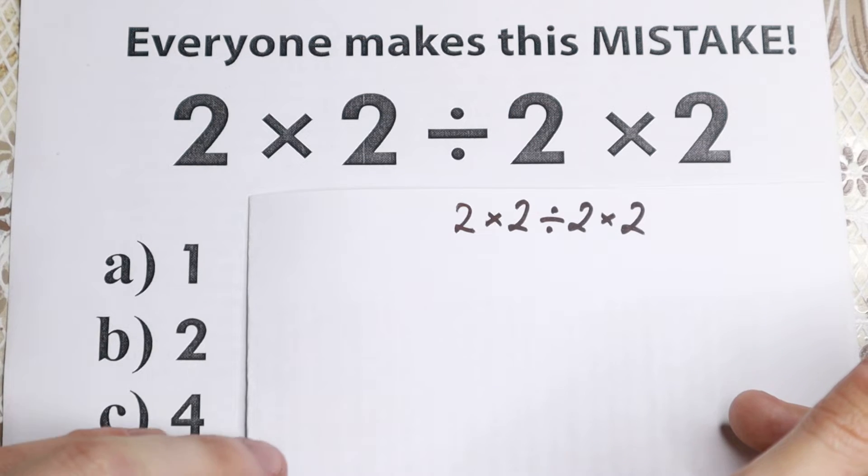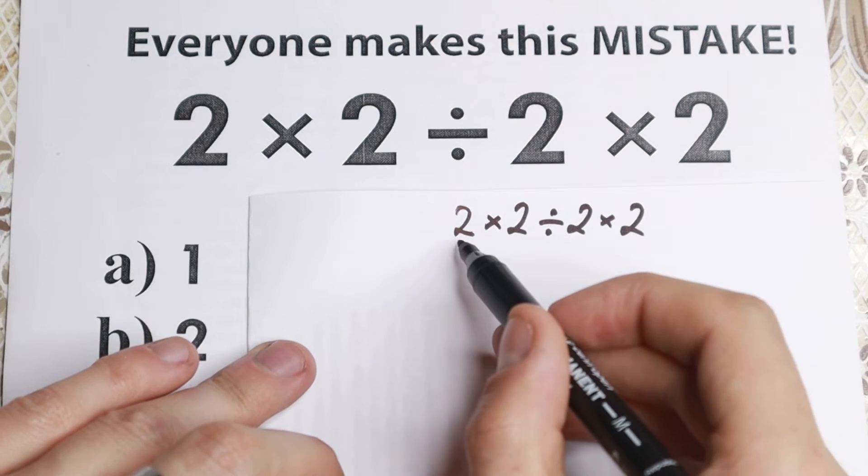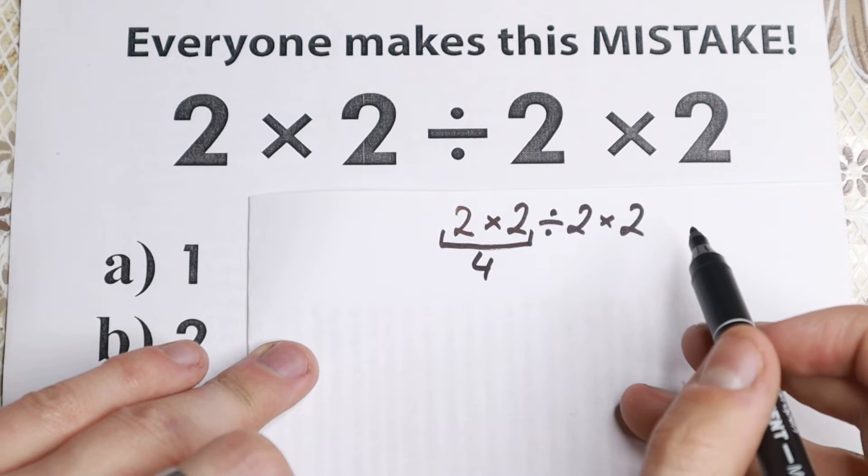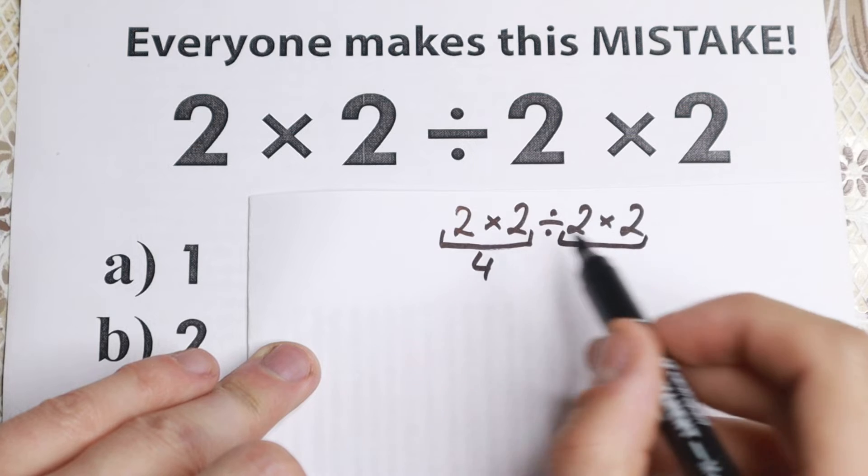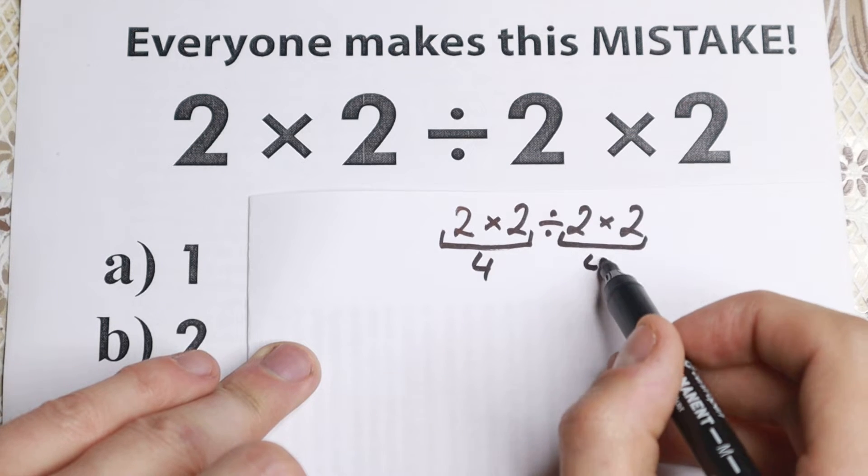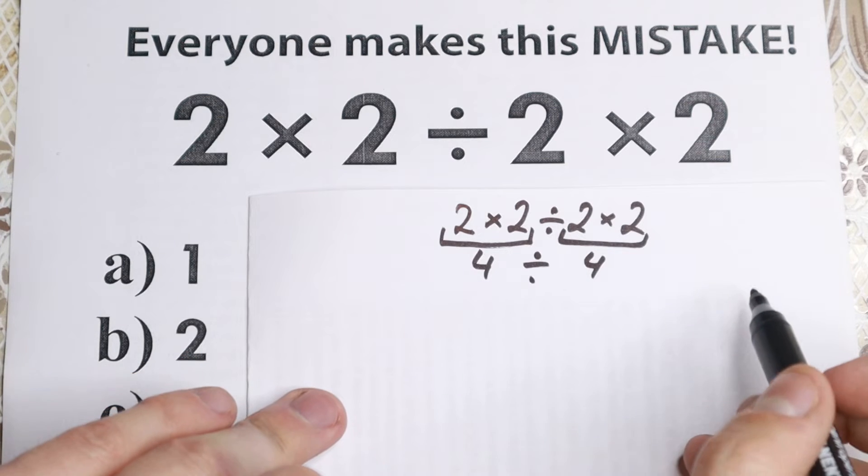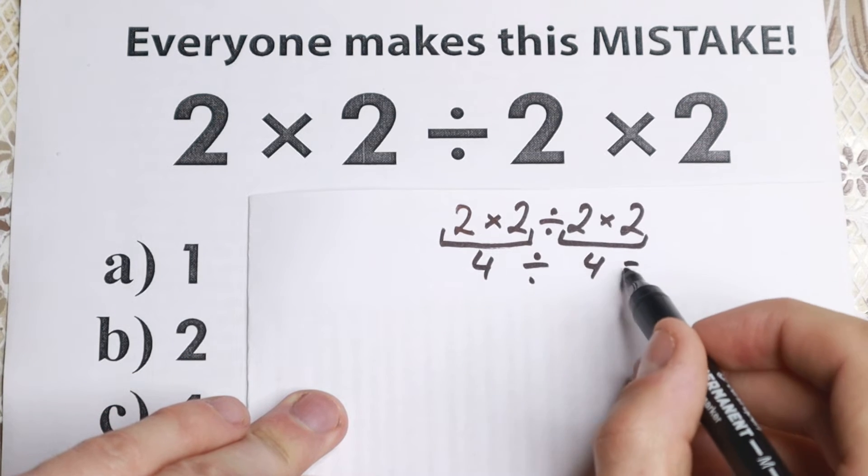A lot of students solve it like that. They say 2 times 2 equal to 4. They start with this one. 2 times 2 equal to 4 which is really great. And they say, in the end 2 times 2 the same thing is right here, equal to 4. And they say, 4 divided by 4 because we still have division in the middle. So 4 divided by 4 equal to 1.